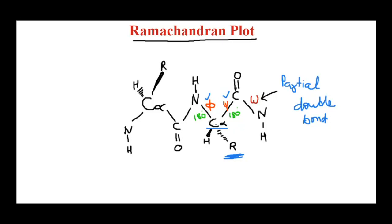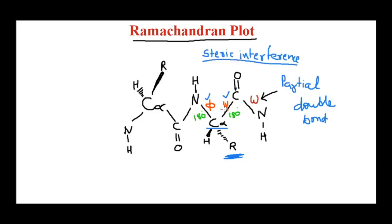The rotation that occurs between the alpha carbon–nitrogen and alpha carbon–carbon bonds cannot be random. The alpha carbon also has side chains attached, and all amino acids will have specific side chains. So when it is rotating, depending on the structure of the amino acid, there is a phenomenon of steric hindrance. Because of this steric hindrance or steric interference, some of the bond angles are prohibited — they are not allowed.